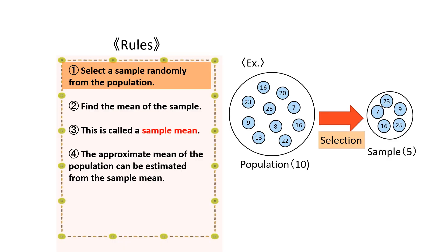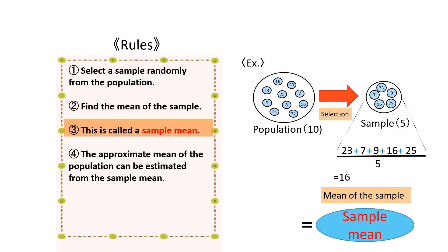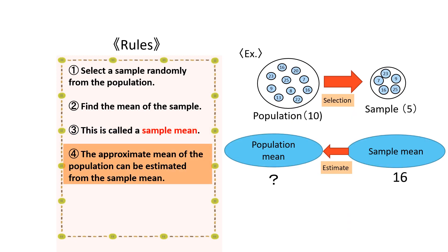First, select a sample randomly from the population. Next, find the mean of the selected sample. This is called the sample mean. The approximate mean of the population can be estimated from the sample mean.